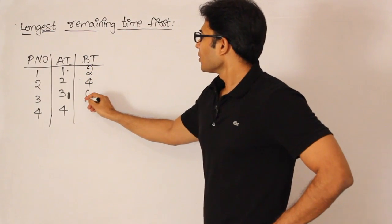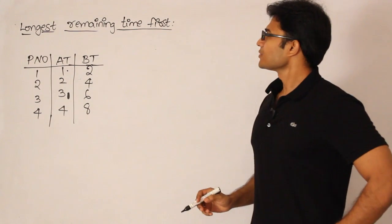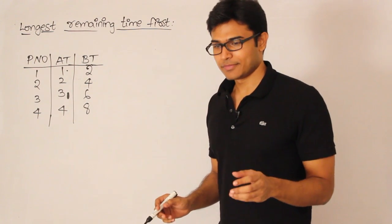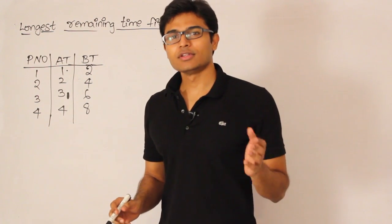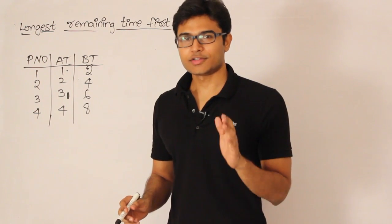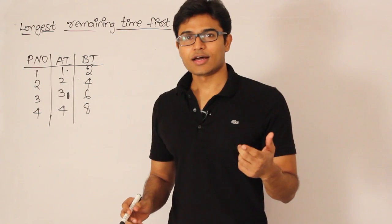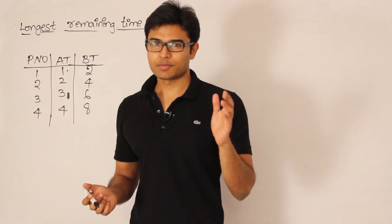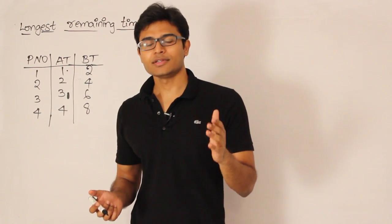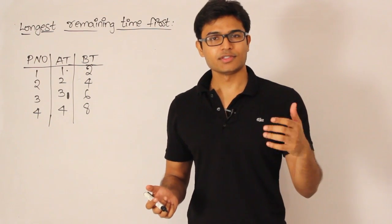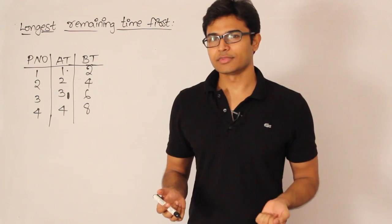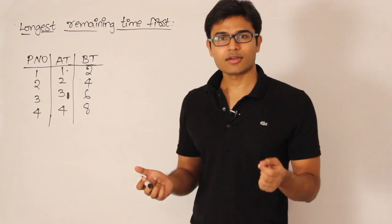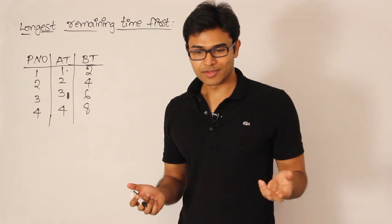Let's solve the Longest Remaining Time First (LRTF) algorithm. Just like Shortest Remaining Time First, the difference is that here we take the longest jobs. We start with some job, execute it for some time, then stop and check whether we got any new process with the longest remaining burst time, and then continue that way.